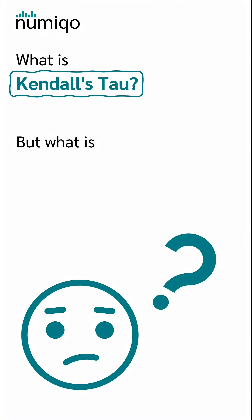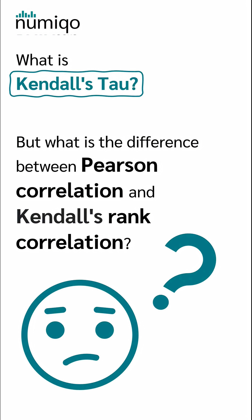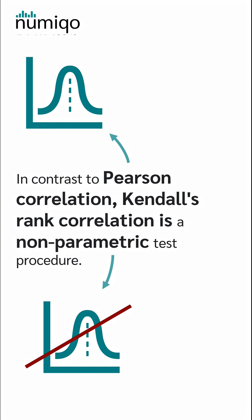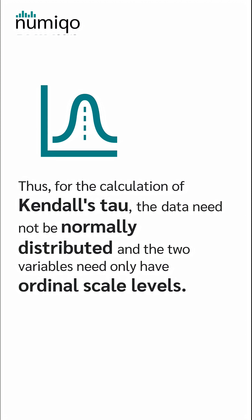But what is the difference between Pearson correlation and Kendall's Rank correlation? In contrast to Pearson correlation, Kendall's Rank correlation is a non-parametric test procedure. Thus, for the calculation of Kendall's Tau, the data need not be normally distributed and the two variables need only have ordinal scale levels.